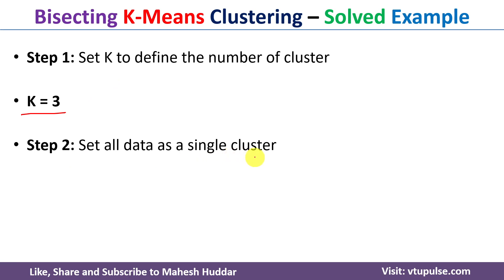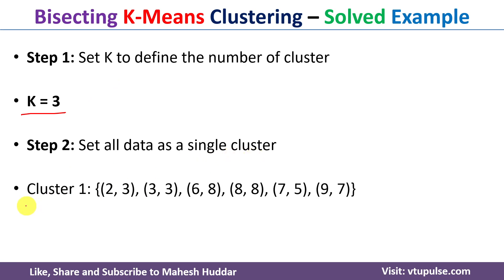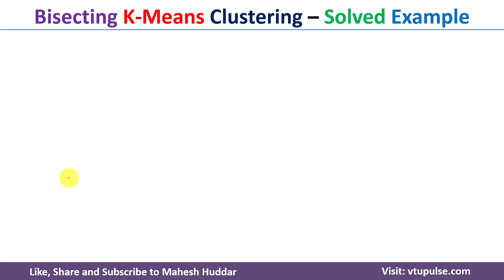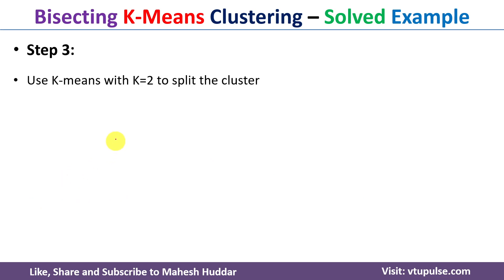The second step of the bisecting k-means clustering algorithm is to set all data points as a single cluster. So cluster one contains all six given data points. Now, in the third step, we need to apply the k-means clustering algorithm and divide these data points into two clusters, so the value of k is equal to two for this step.